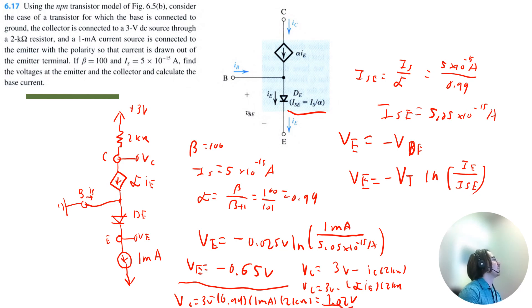Lastly we want to calculate the base current. Base current can be calculated by taking the collector current and dividing it by beta. Once again the collector current is just alpha times the emitter current divided by beta. So the base current will be 0.99 times 1 milliamp divided by 100 for beta. So I get a base current of 9.9 microamps.